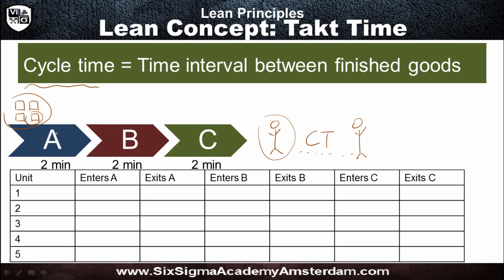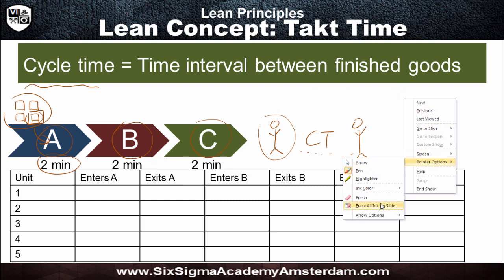Have a look at this process. Each raw material unit has to go through three steps: step A, B, and C, each one of them takes two minutes. We start with one unit, take it through sub-process A — maybe cutting — then it goes to sub-process B, maybe painting, then to sub-process C, maybe packaging, and then it's basically done. What is going to be the cycle time in this case?